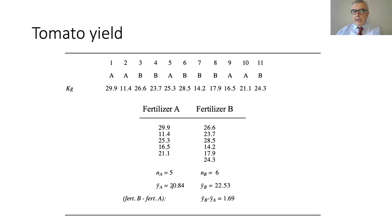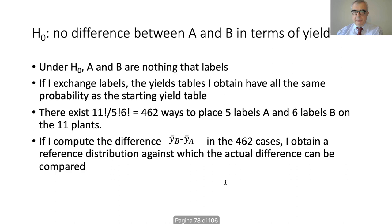I compute the average yield for arm A and the average yield for arm B. Fertilizer B appears better, with an average tomato yield of 22.53 kilograms against 20.84 kilograms for A. As a measure of improvement, we compute the difference between the two sample means, which is 1.69 kilograms.